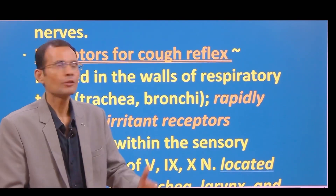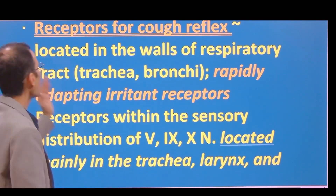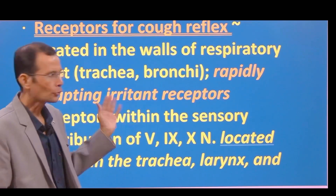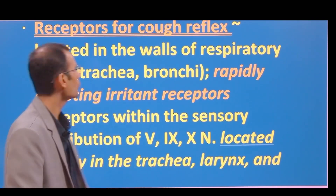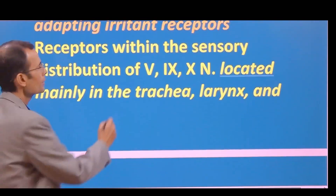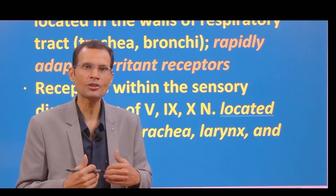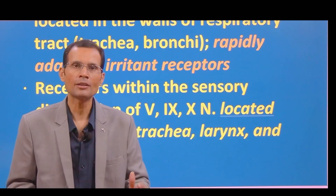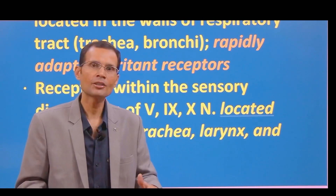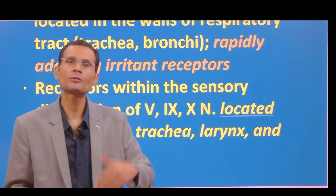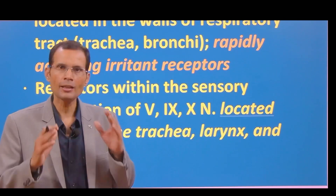So let's see for the cough reflex, what are these components? Receptors for the cough reflex are located in the walls of the respiratory tract. The respiratory tract is lined from within by epithelial cells — this is where the receptors are located, mainly in the trachea and bronchi. In the initial generations of the respiratory tree, these receptors are abundant. As you go lower, they become less and less in number, and are almost absent beyond the respiratory bronchioles. Beyond the respiratory bronchioles are the alveoli, and at those places cough receptors are not present.